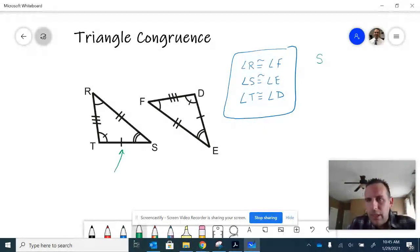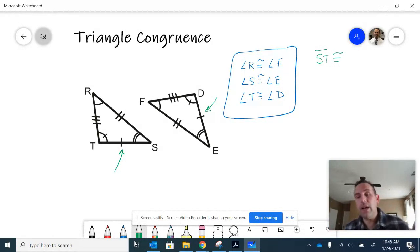I'm going to call that segment S-T is congruent to this side with one marking. Again, let's not focus only on alphabetical order though. I want to back up just a second.